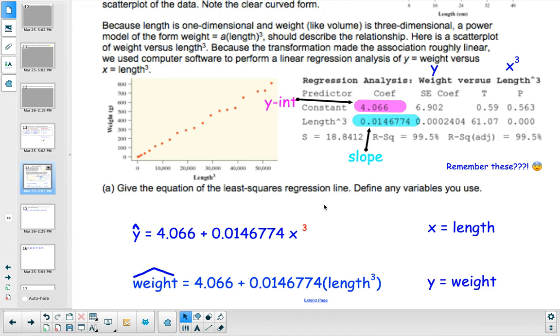Part A: Give the equation of the least squares regression line and define any variables. The predicted y, or weight, equals 4.066 plus 0.0146774 times length to the third power.